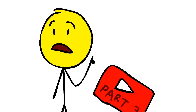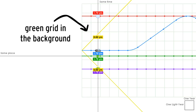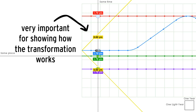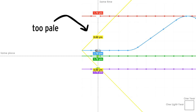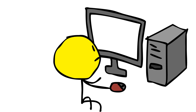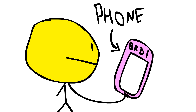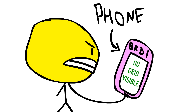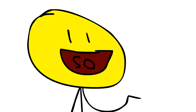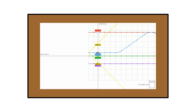Before I get on with the video, I want to point out that in the previous two videos, the green grid in the background, which is very important for showing how the transformation works, was too pale to see. On some screens it showed up fine, but on other screens, like my phone, it's completely washed out. So I'm going to show the two clips again, but with everything much darker.